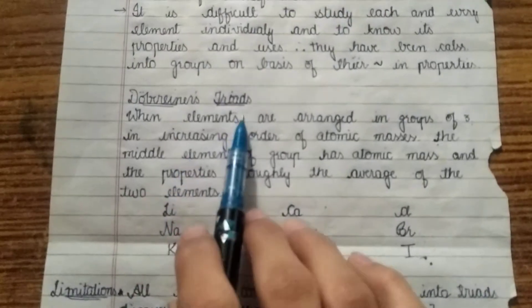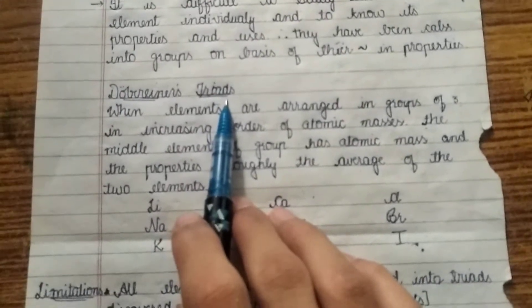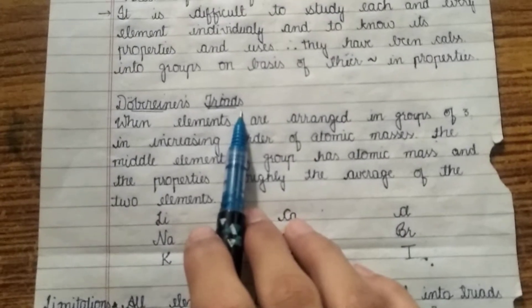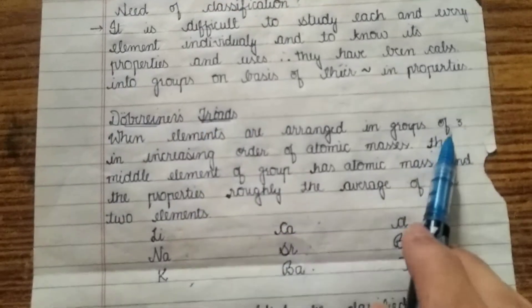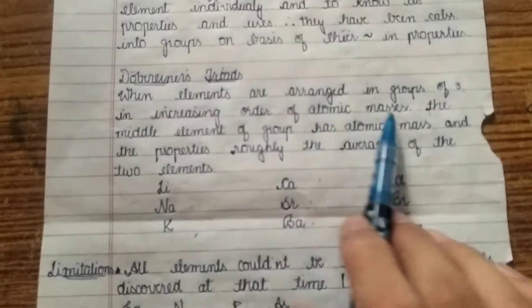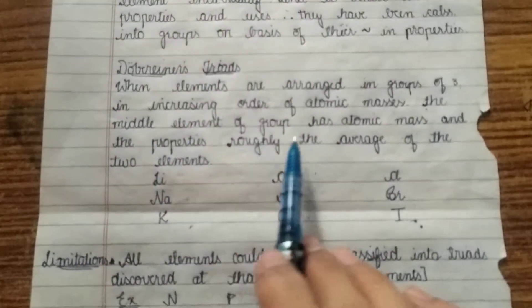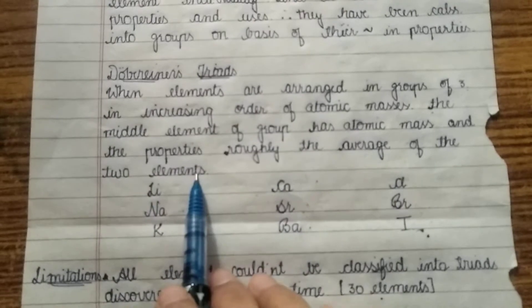Now we will see Dobereiner triads. What are Dobereiner triads, what are its limitations, and why it is important. When elements are arranged in groups of 3, therefore triads in the group of 3, in increasing order of atomic masses, the middle element of the group has the atomic mass and properties roughly the average of the other 2 elements.